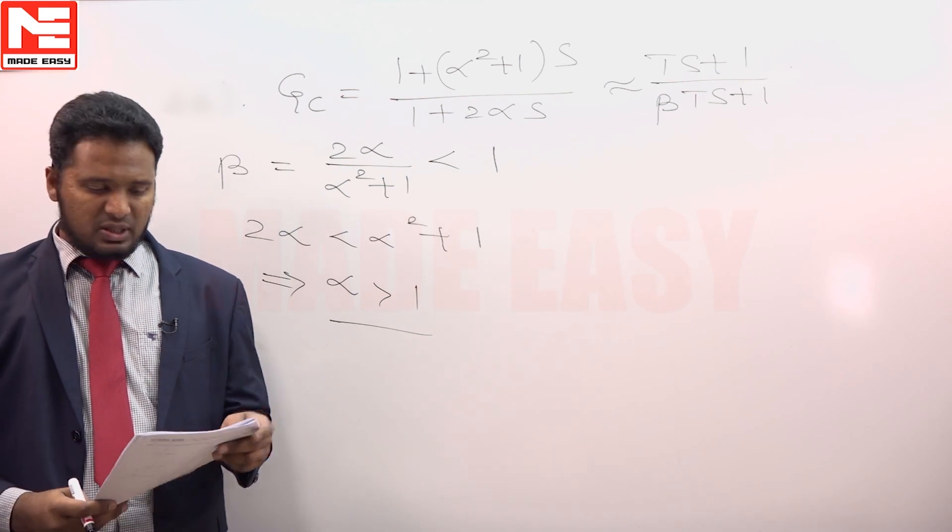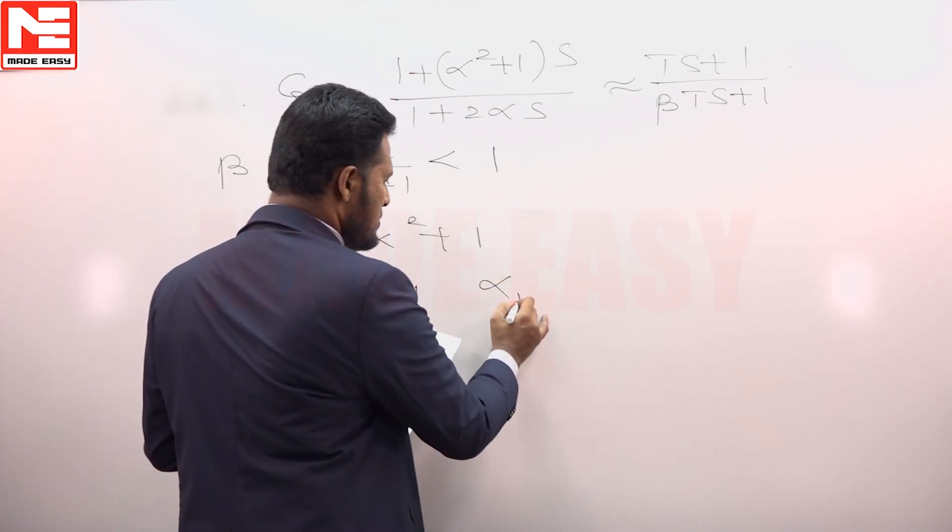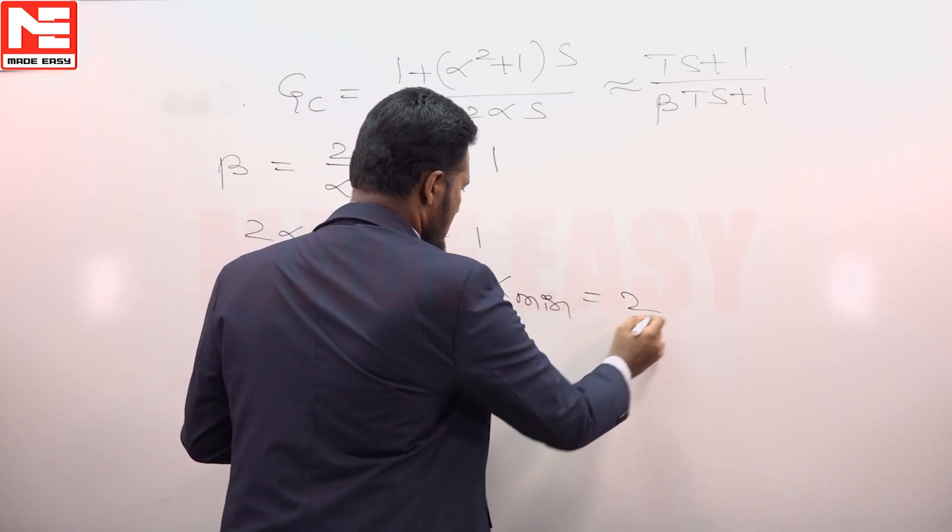So the value of alpha greater than 1 such that it is a natural number is minimum 2. So the value of alpha is minimum 2.